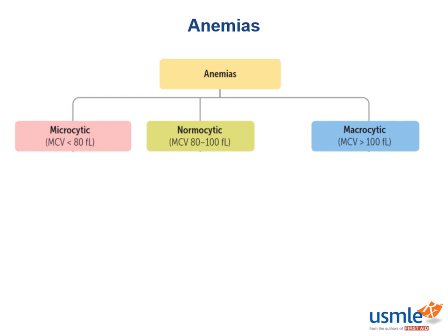A normal MCV is 80 to 100 microns. So a microcytic anemia, or small red blood cell anemia, is one with an MCV less than 80. A macrocytic anemia is one with an MCV greater than 100, or big red blood cells. And a normocytic anemia is one with a normal MCV of 80 to 100 — normal size red blood cells. So if you have a question stem with an anemic patient, the very first lab result you want to look at after hemoglobin and hematocrit is MCV, as this will help streamline your differential diagnosis.